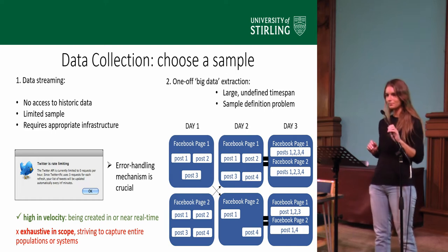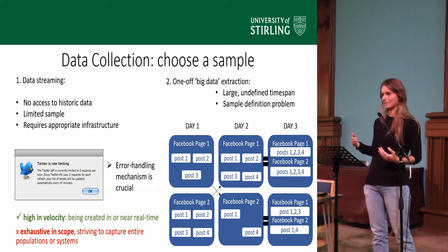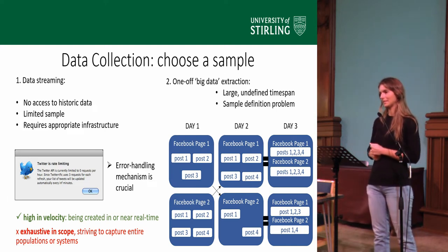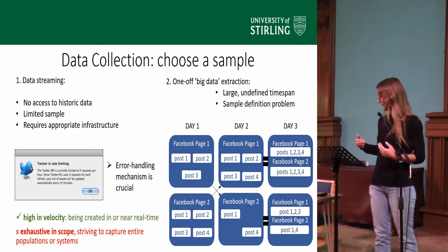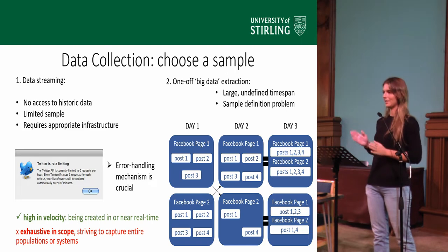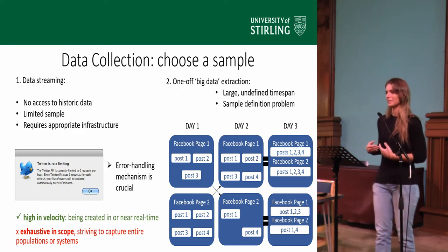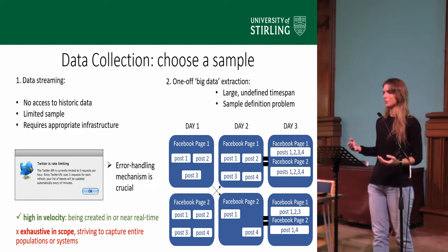There are two possible ways to collect data from social media. One of them is to collect data as it appears on the internet — the data streaming approach. The problem with this approach is that it's a little bit limiting in that it doesn't give you access to historic data, only the ones appearing at the time. For example, if right now I wanted to collect data to look into how the past was used during the UK general elections, I wouldn't be able to obtain this data because the elections were last year.